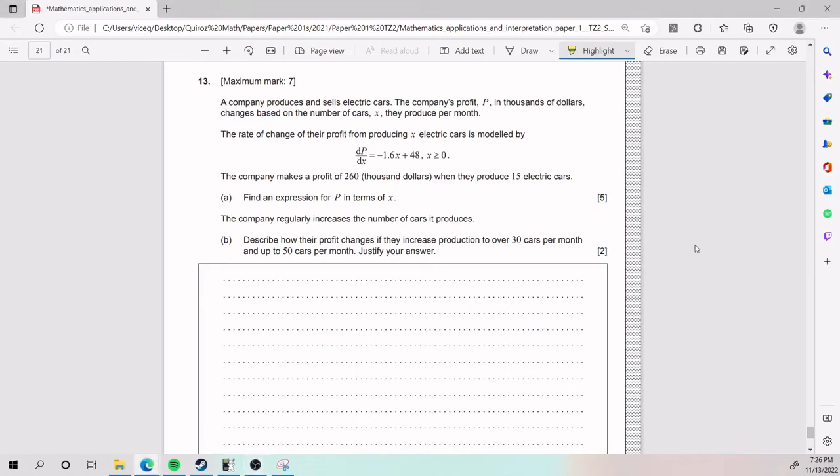Alright, and for this last one, we actually have an integral problem. It's a little bit complicated. We have that a company produces and sells electric cars. The company's profit, P, in thousands of dollars, changes based on the number of cars X they produce per month. The rate of change of their profit for producing X electric cars is modeled by this function. The company makes a profit of $260,000 when they produce 15 electric cars. This information seems useful. We're probably going to have to use it later. For part A, we need to find an expression for P in terms of X.